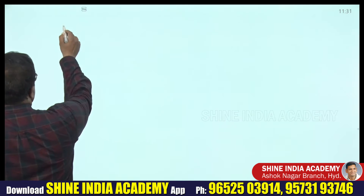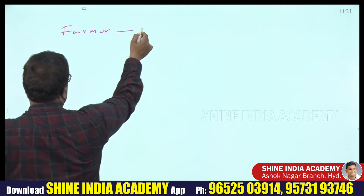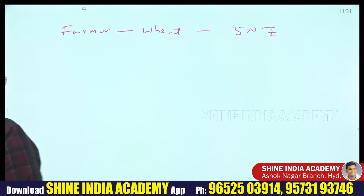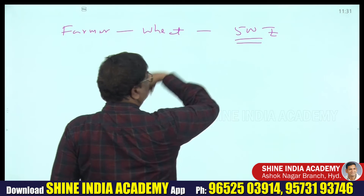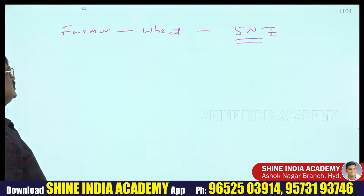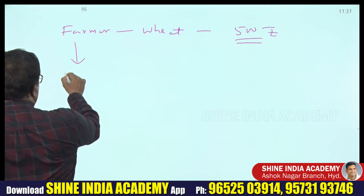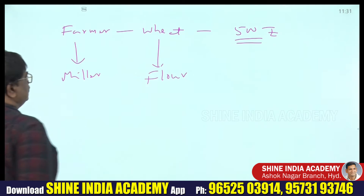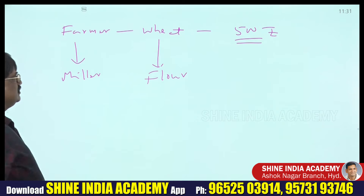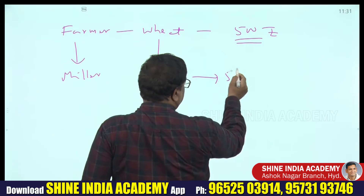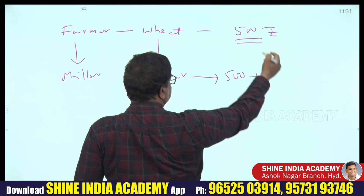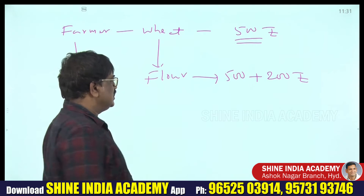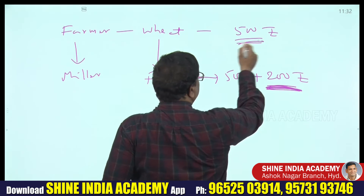For example: a farmer has wheat valued at 500 rupees — that is the starting (final) value. A miller converts wheat into flour, adding value of 200 rupees. We should consider 500 as one stage's final, and 200 as the next. Former values should not be taken; only final values are counted.